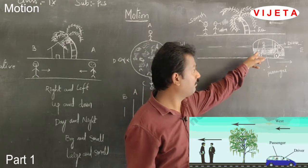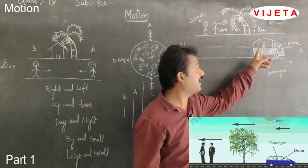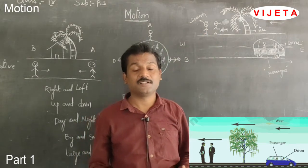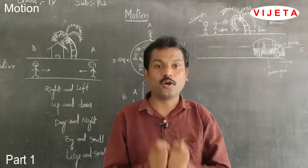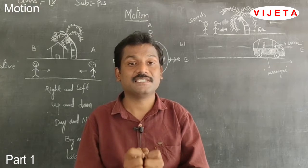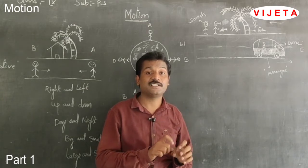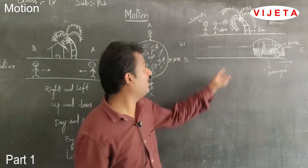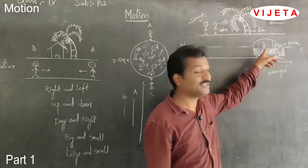So according to Srinu, the car, passenger, and driver are in motion. But according to the driver and passenger, the tree, Srinu, and Somesh are in motion. Finally, we can define motion: an object which continuously changes its position with respect to time is said to be in motion. According to Srinu, the position of the car continuously changes, so the car is in motion.